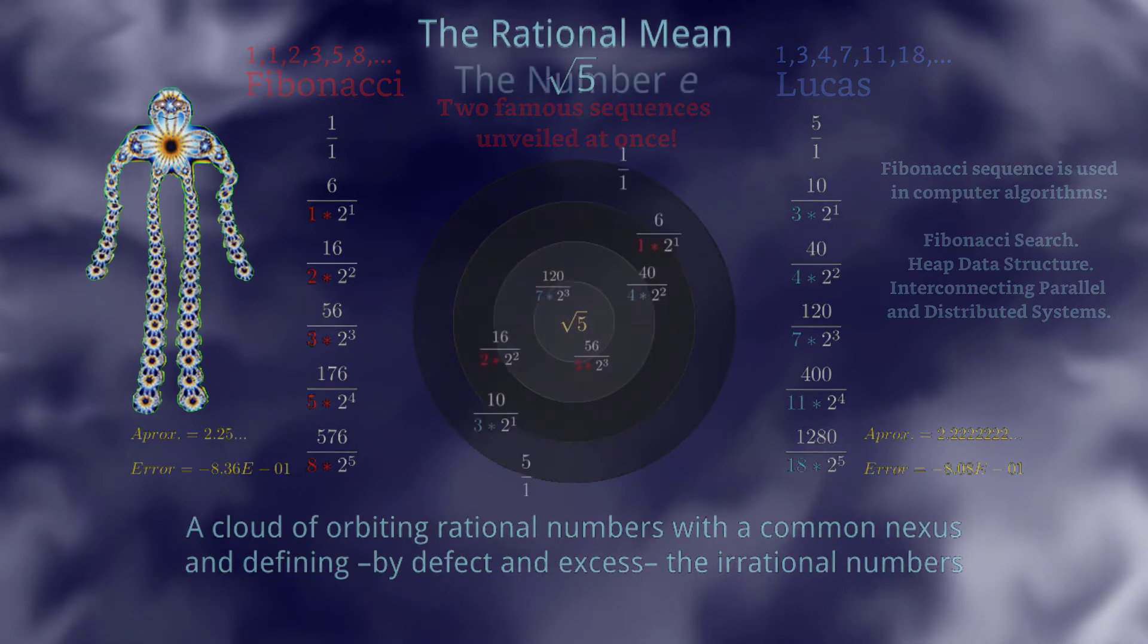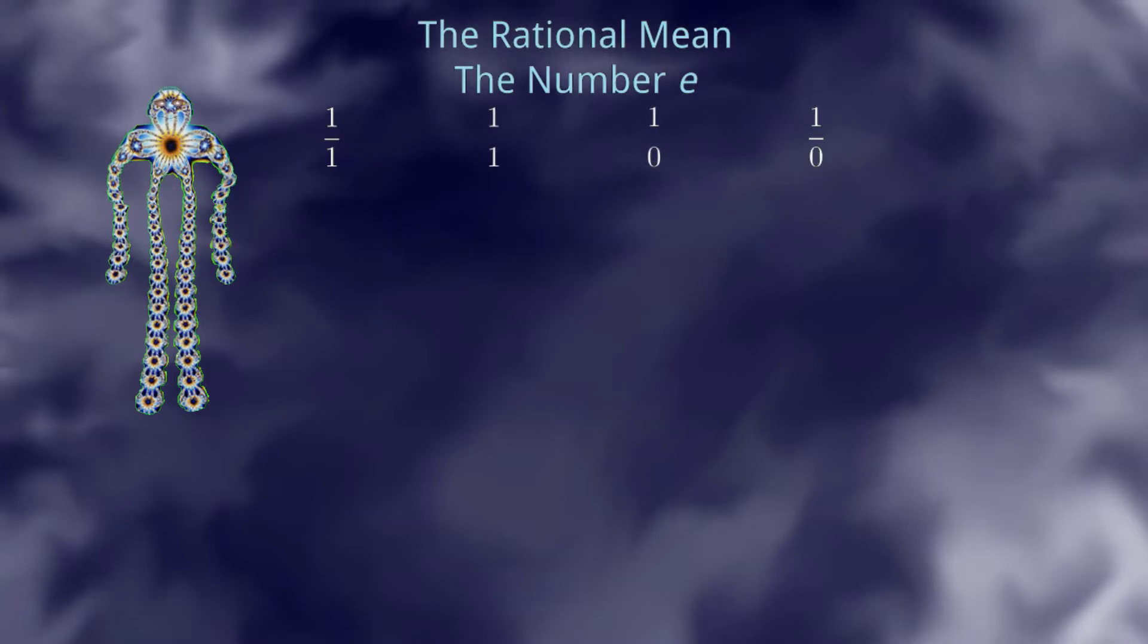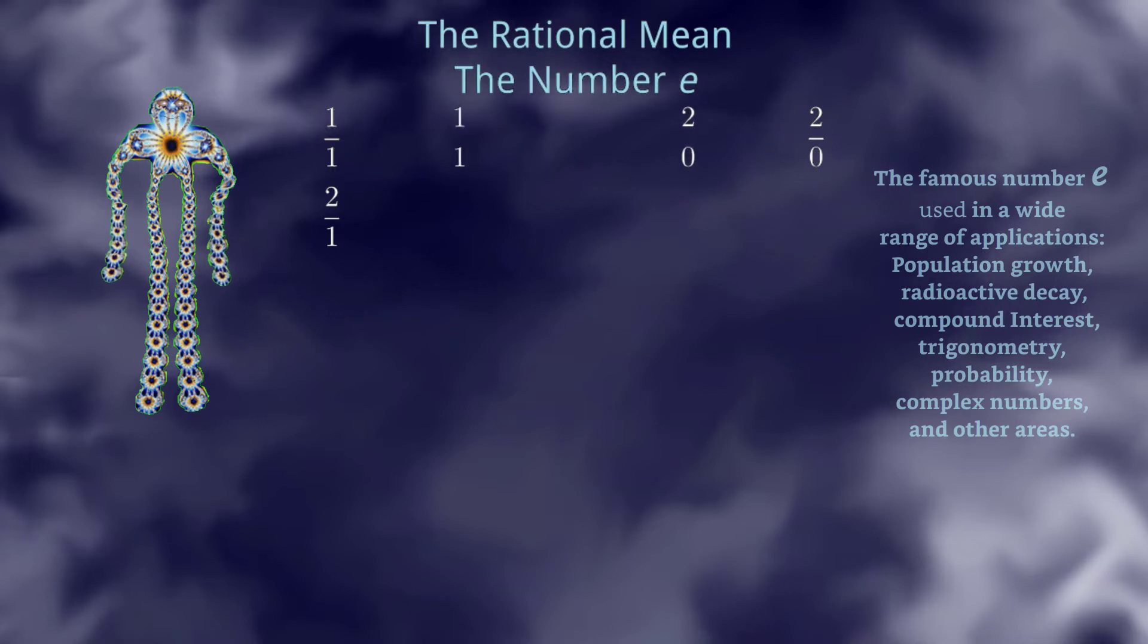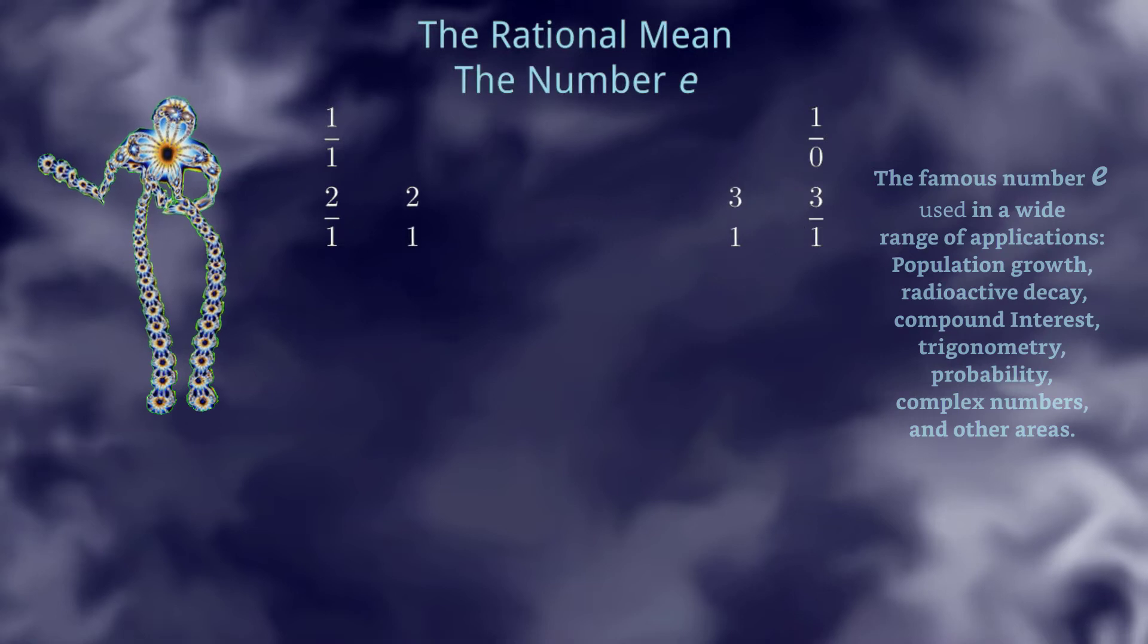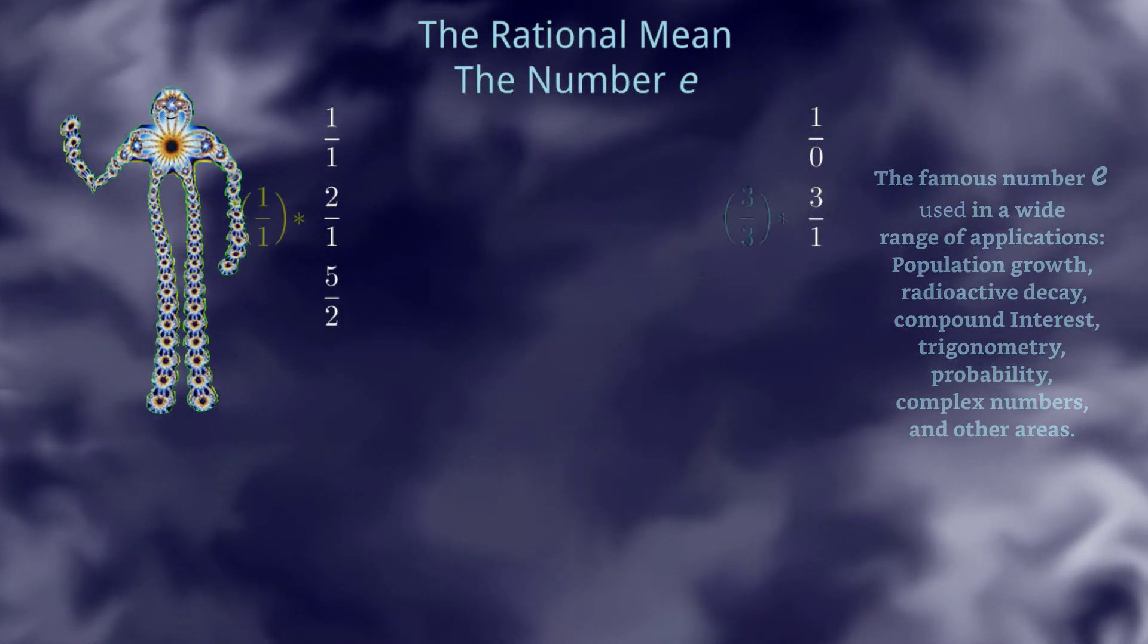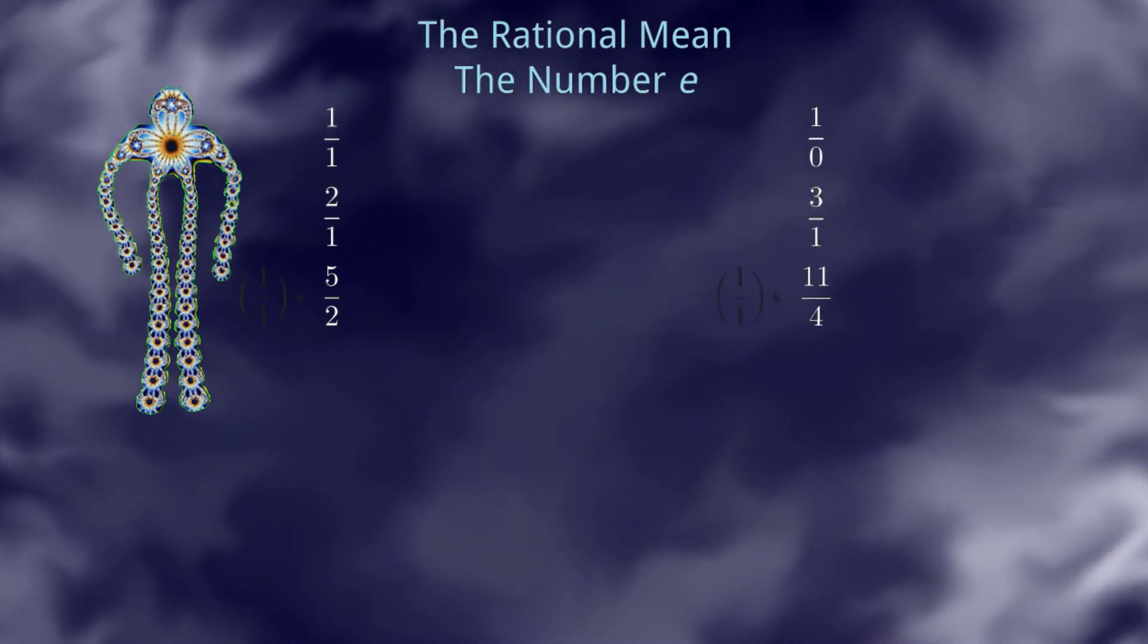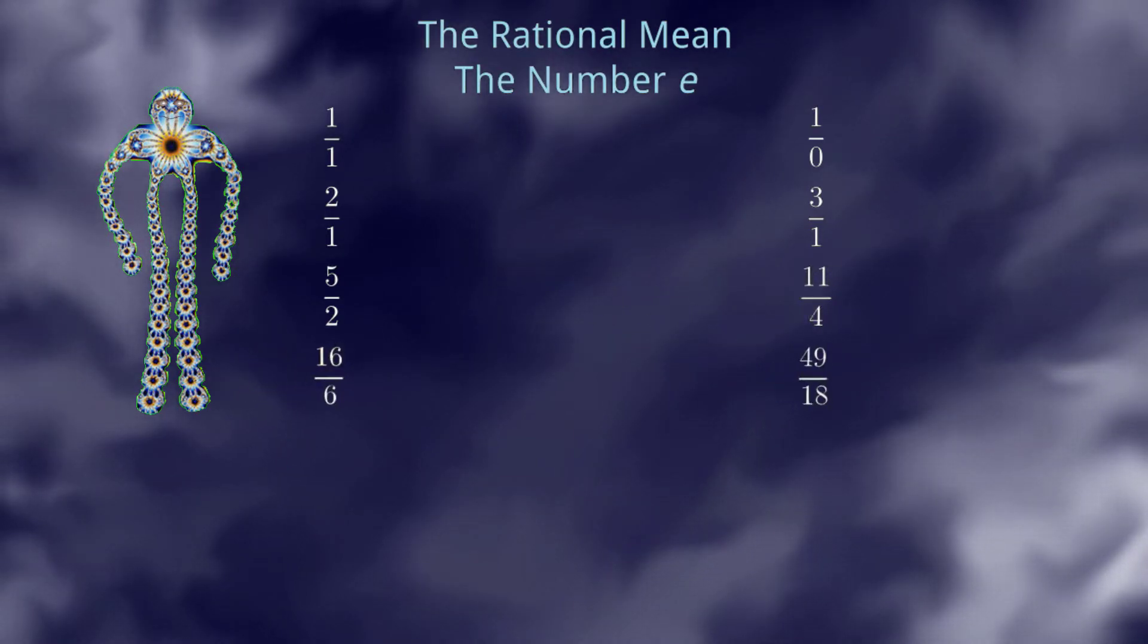And we also have the transcendental numbers and their approximations by defect and excess. Conceptualizing the transcendental numbers from the point of view of the rational mean. Something you probably never saw in any classroom or the literature. But don't worry, even my creator does not know about this either. Please, do not get surprised by the infinity expression 1 to 0 as the origin of this process, because it is also the origin of the convergence in the well-known continued fraction of the number E.